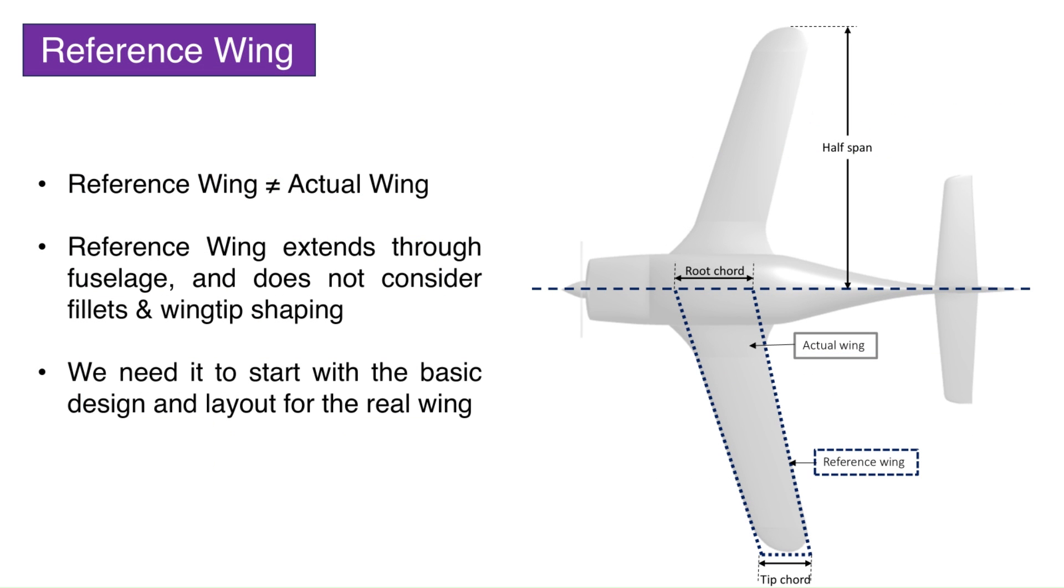Now, we create a reference wing by selecting various geometrical parameters. This reference wing is different from the actual wing in two ways. First, it extends through the fuselage to the center line and its tip is squared even if the actual wing may have rounded wing tips. Second, the root airfoil of the reference wing is considered at the center line and not at the wing fuselage attachment. But this is only for aerodynamic purposes, as it is not built. To create this reference wing, we need to select the aspect ratio.